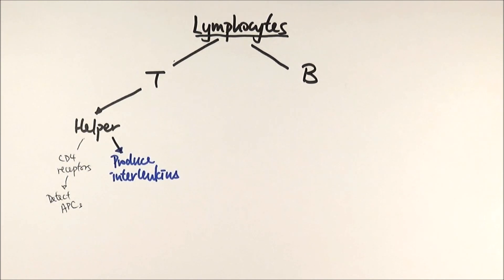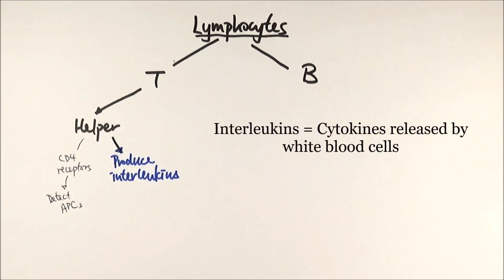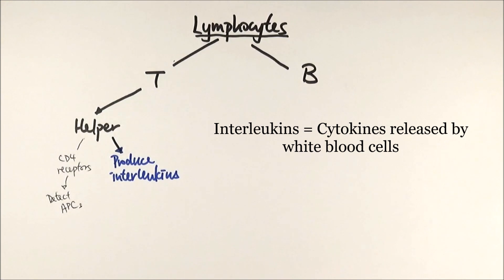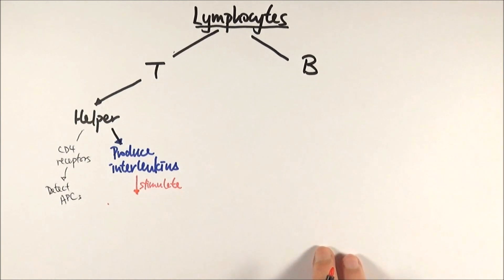In a previous video, we mentioned a group of chemicals called cytokines. Cytokines refer to any cell signaling molecules — it's quite a broad group of chemicals. Interleukins are a type of cytokine, specifically cytokines that are released by white blood cells. That's why we use the word interleukins here. So interleukins, being cell signaling molecules, stimulate other cells to do various things.